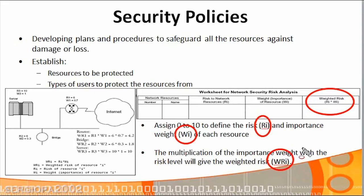Why is it important to calculate this? First, you get a list of all your resources. It also forces you to realize which resources are most important in your network, and to estimate the risk factor for each one. Finally, the WRI gives you a conclusion — resources with the highest WRI values are the ones that need the strongest protection and security measures.